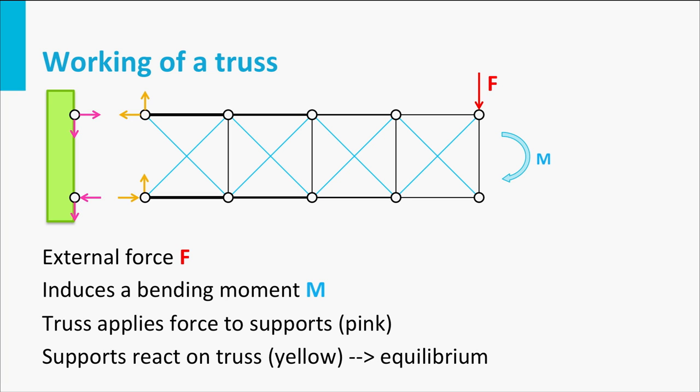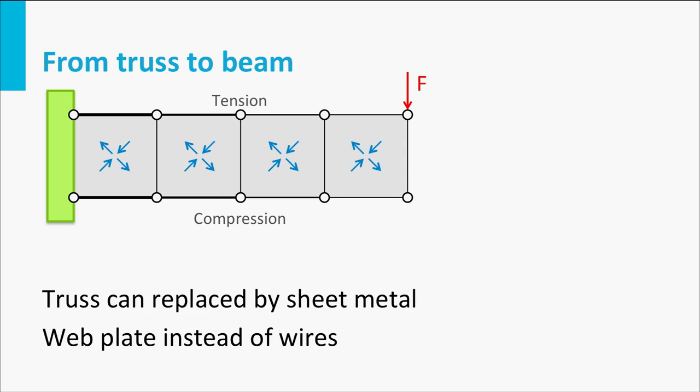From this truss to a beam-like element is a very small step. In this figure the wires are replaced by a metal plate. The sheet has the same function as the wires. The sheet transfers the vertical loads. The wires were loaded in tension, but the metal sheet is loaded in shear, a combination of tension and compression.